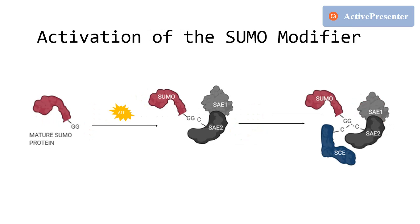The attachment of the mature SUMO protein by a covalent bond is accomplished in a 2 to 3 step process. Step 1 is the activation of the SUMO protein by the E1 activation enzyme. The E1 is a heterodimer composed of two subunits: the regulatory subunit and the catalytic subunit. The activation step is an ATP-dependent reaction, where AMP from the ATP links to the double glycine motif in SUMO, and upon the release of AMP, a thioester bond is formed between the cysteine residue of the catalytic subunit of the E1 and the glycine in SUMO. This results in a conformational change in the E1.